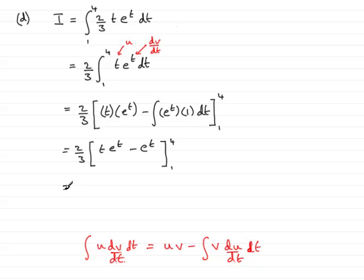Next, we need to just substitute the 4 through, so we have the 2 thirds here. Put 4 in for t, and we have 4 e to the 4, minus e to the 4. Let's put that in brackets.